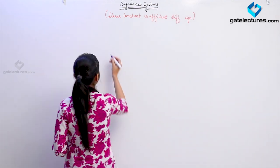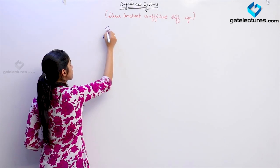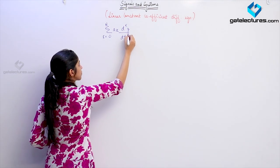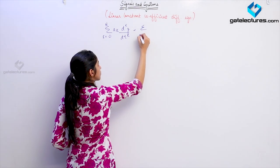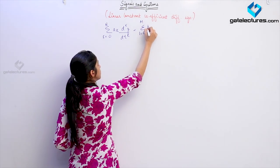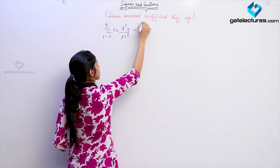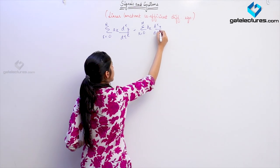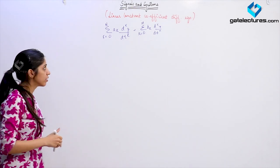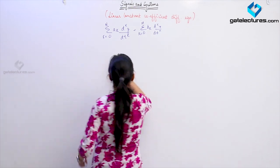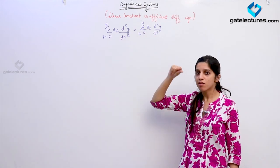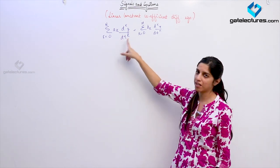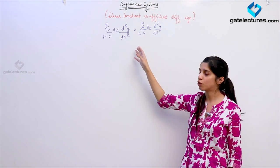If you are having any equation of a general form — a general differential equation of this form — where a_k and b_k are constants, one thing you can see is that there are no constant terms on either side. Only terms containing y and x, which is important for the equation to be linear.